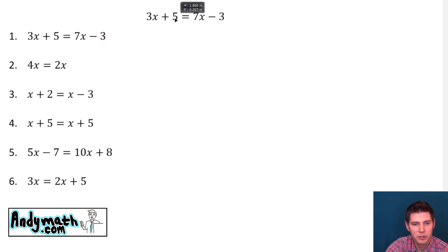So for the first one, 3x plus 5 equals 7x minus 3. Right now we have x on both sides. We want to move all the x's to one side. I'm going to choose to do the smaller number, the 3x, because when we subtract 7 minus 3x, we get positive 4x. So we're going to try to get the positive x.